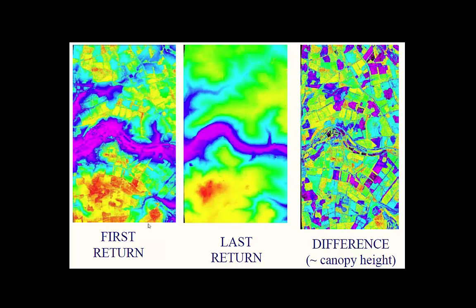You can do this in any environment, and depending on what you're interested in, you would use the results differently. If you're interested in the topography of the landscape — for instance, to predict where floods might go if they reach a certain stage — you would get rid of these first returns because they represent vegetation, not the ground surface. You might then end up with a digital elevation model.